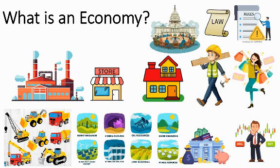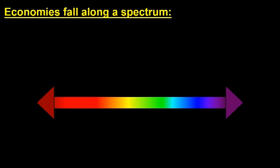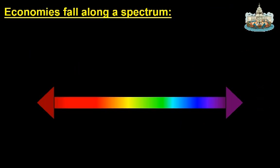Within the world we have economies that differ — economies with different rules, different philosophies — and those economies fall along a spectrum with two extremes. We want to look at the exaggerated versions of these economies. What we're examining is the role of the government in regulating and overseeing that economy. That is the major difference between the different world economies.